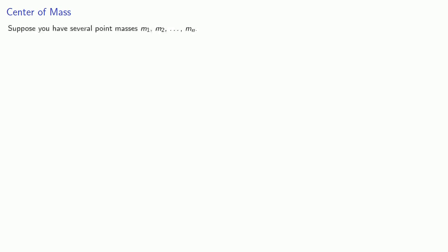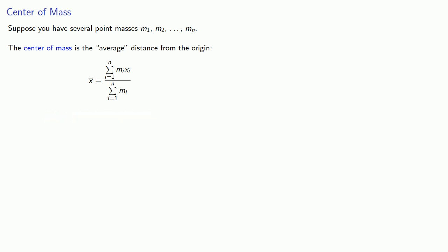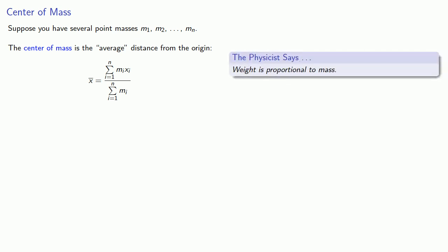One application of the integral is to find the center of mass of an extended object. Suppose you have several point masses — masses that only have location. The center of mass is the average distance from the origin: the sum of the products of the masses times their distances, divided by the total mass. Since weight is proportional to mass, what we're finding is very literally the weighted average of the distances from the origin.